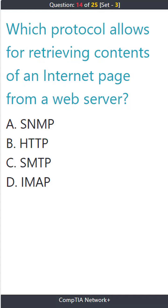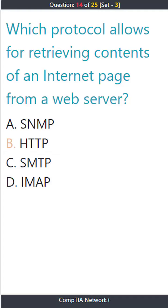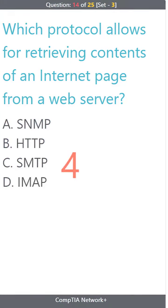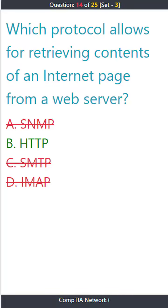Question 14. Which protocol allows for retrieving contents of an internet page from a web server? A. SNMP. B. HTTP. C. SMTP. D. IMAP. The correct answer is B. HTTP.